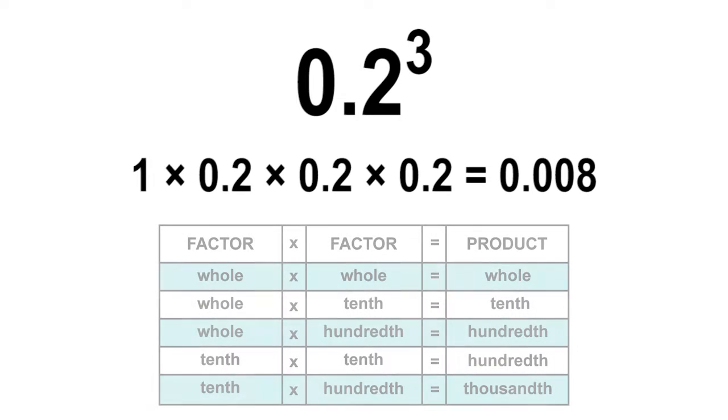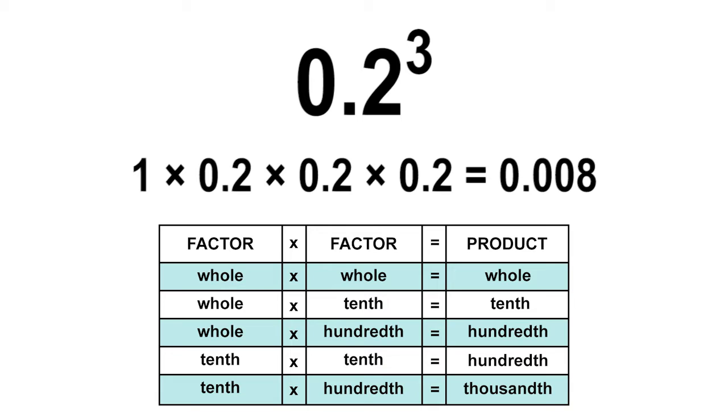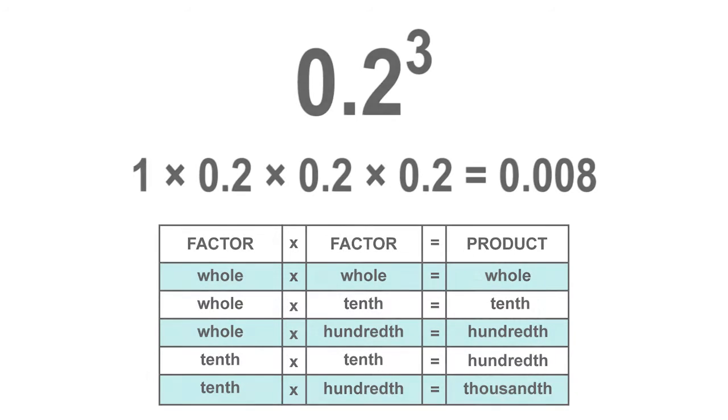In fifth grade, the following chart was used to help understand when multiplying decimals. This helps give understanding to the place value when multiplying by a number or fraction smaller than one.